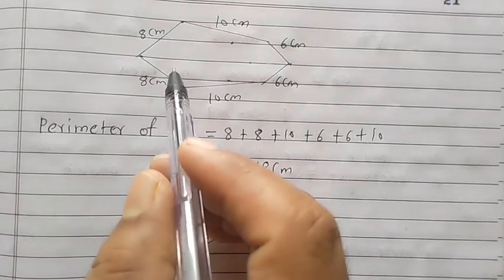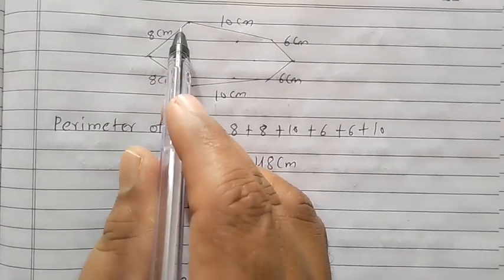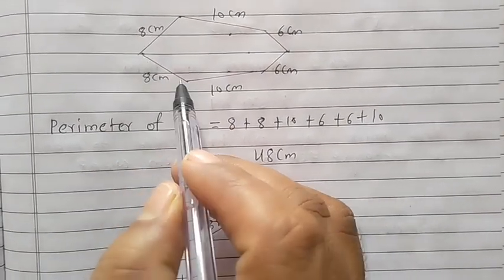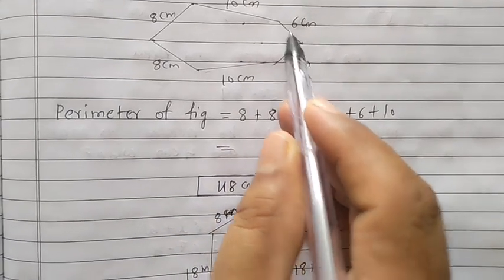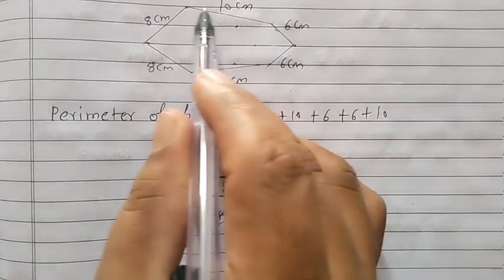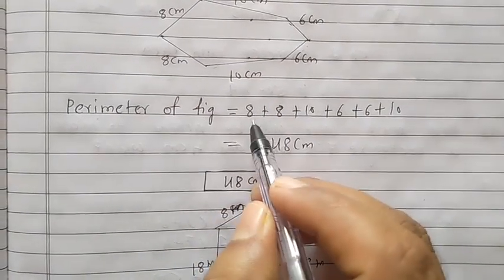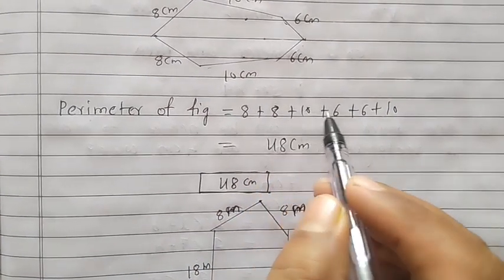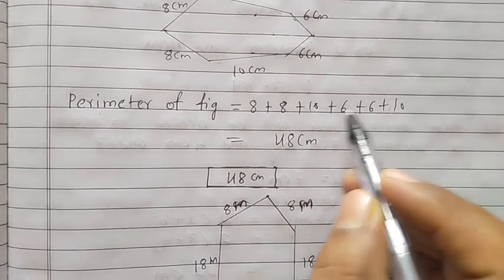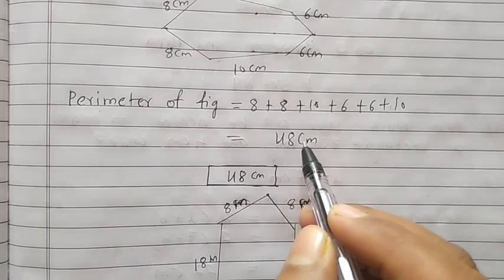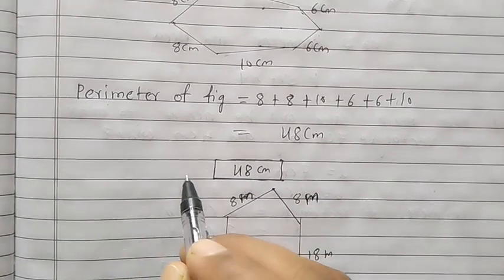Now we want to find the perimeter of the second figure — the sum of all its sides. The perimeter of the figure is equal to 8 plus 8 plus 10 plus 6 plus 6 plus 10. If we add these, we get 48 centimeters. So the perimeter of the figure is 48 centimeters.